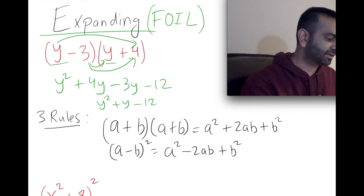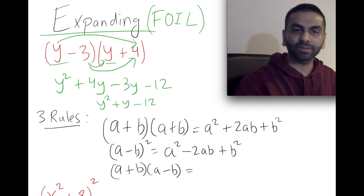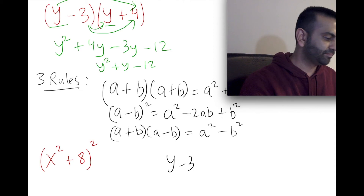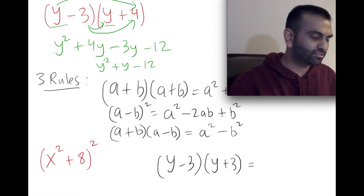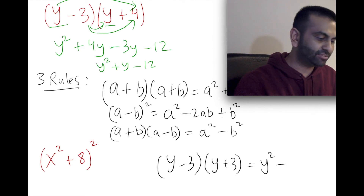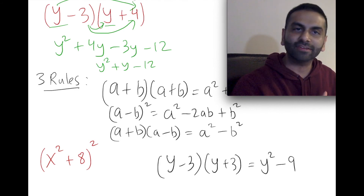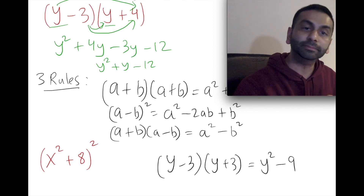Rule three: what if you have (a + b)(a − b)? Instead of squaring the same binomial twice, you have one with a plus and one with a minus. That always simplifies to a² − b². For example, if the problem were (y + 3)(y − 3), instead of FOILing it out you can just use this trick: that's y² − 9, because you square the first term and subtract the square of the second term — y² minus 3² — bypassing the full FOIL process.